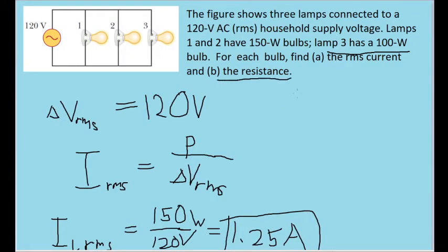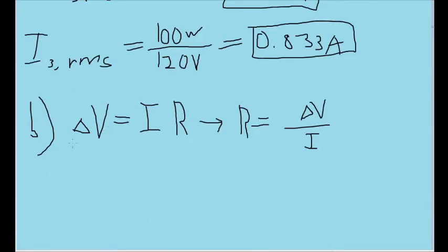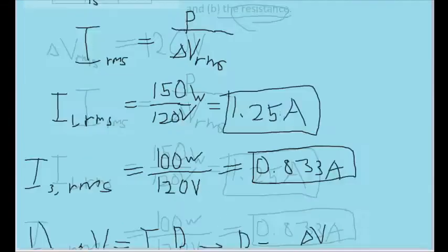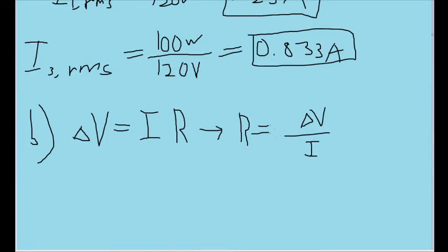For part B, we're looking for the resistance. So we can use Ohm's law, which states that the electric potential difference is equal to the current times the resistance. Or rewrite it algebraically to solve for resistance, which is what we're looking for. And we can see that the resistance is equal to the potential difference divided by the current.